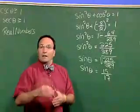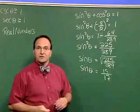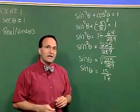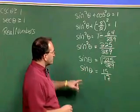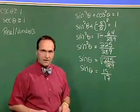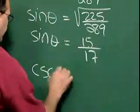Since sine theta equals 15 seventeenths, we can immediately find cosecant theta using the reciprocal identity.